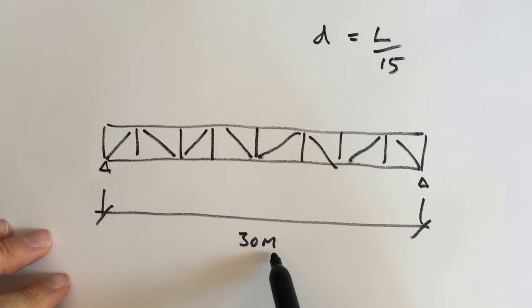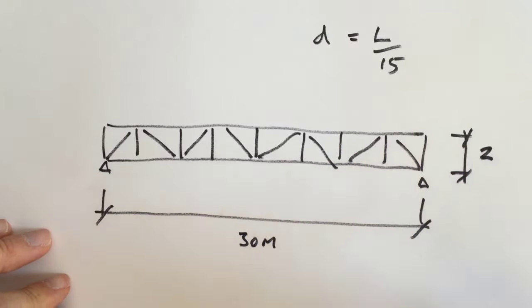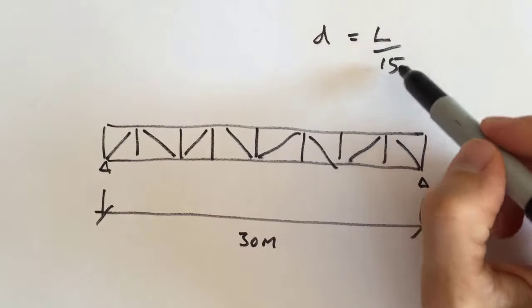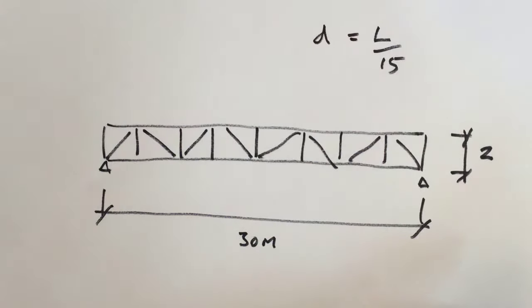The depth is equal to the span over 15. Now that's just an approximate figure. So 30 divided by 15 is 2. So if you're creating a preliminary size of a truss, what you want to look at is the length or the span over 15 or over 18, something like that. So that's the first formula I want you to remember.